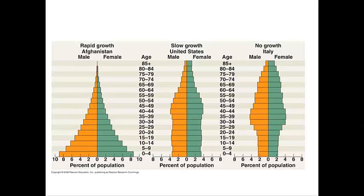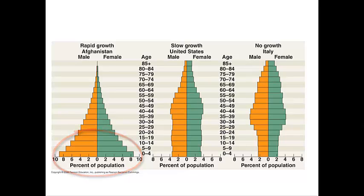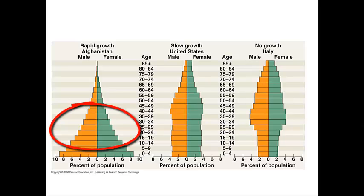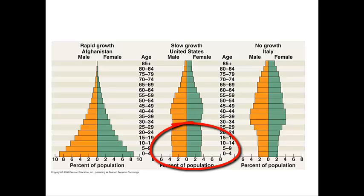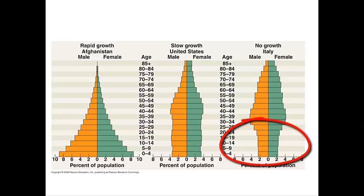Let's look at population growth curves to show examples of each. In Afghanistan, a large percentage of the population is at the lowest age range, meaning those individuals will eventually reach reproductive age and reproduce — therefore the population is growing. In the United States, we have a slow growth curve, with slightly more individuals in younger age ranges than older ones. In Italy, there is a much smaller percent of the population at the younger age ranges, meaning their population is actually decreasing or not growing at all.